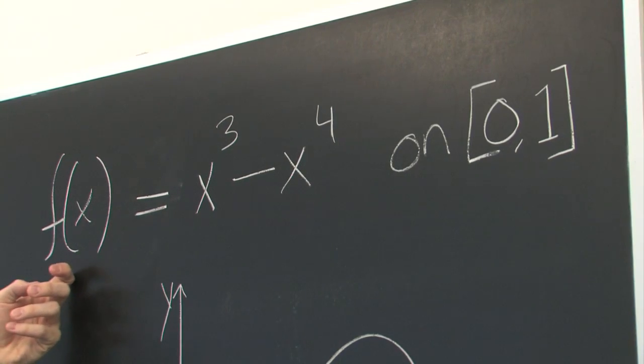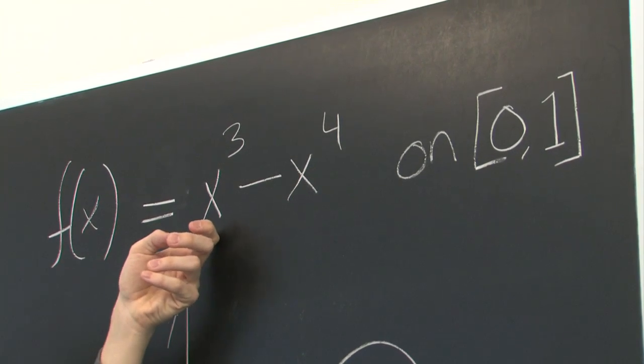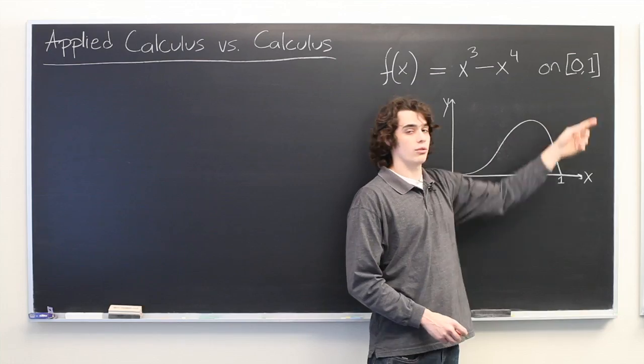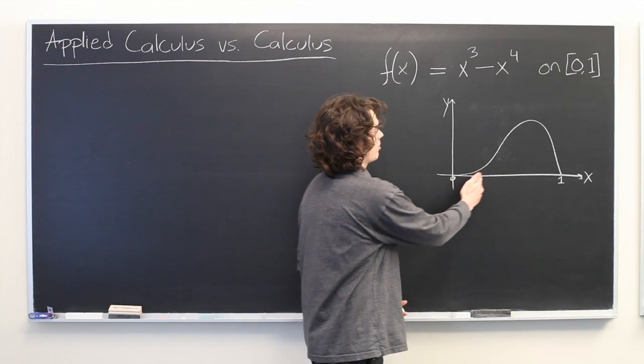So here we have a function f(x) equals x cubed minus x to the fourth on the interval 0 to 1, which looks something like this.